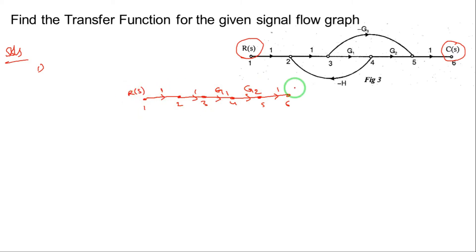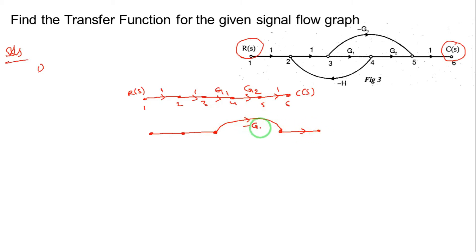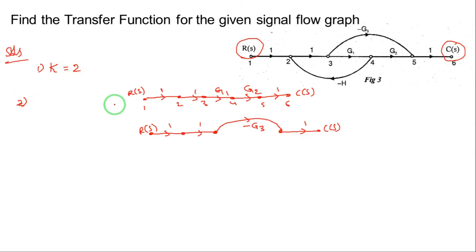This is path number 1. The input is R(s) and the output is C(s). Now identify any other paths. There is another forward path — going directly from node 3 to node 5 and then to node 6. So K, the number of forward paths, is equal to 2. There are two forward paths.